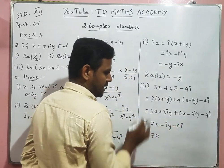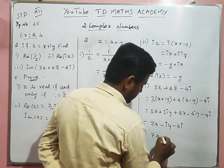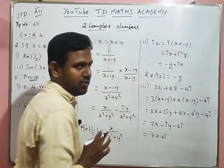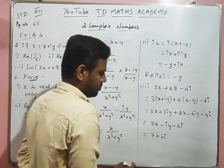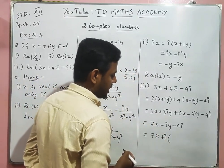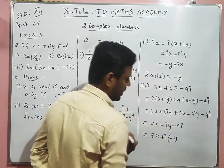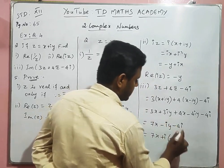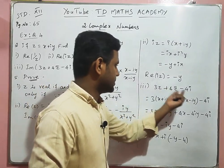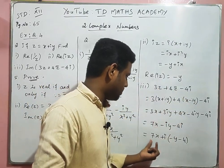The real part is 7x. Taking out the imaginary part: i(-y - 4), so the expression becomes 7x + i(-y - 4). The real part is 7x and imaginary part is (-y - 4).